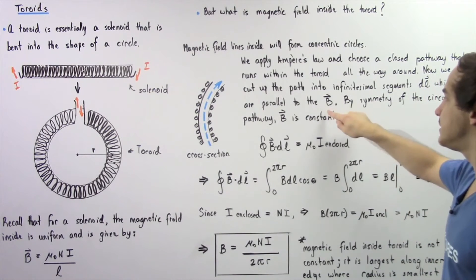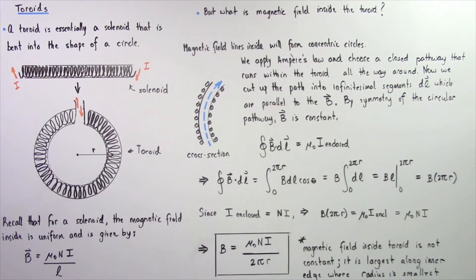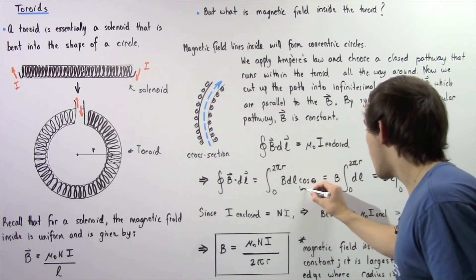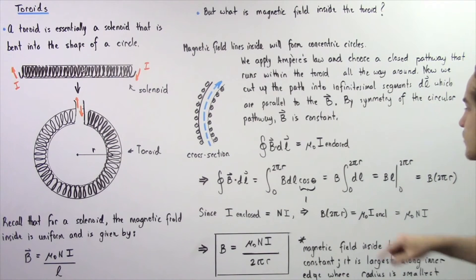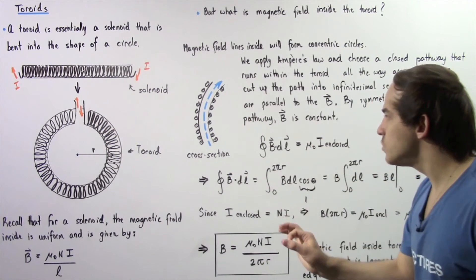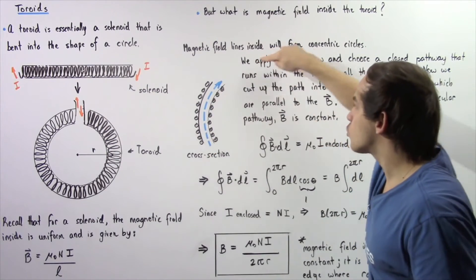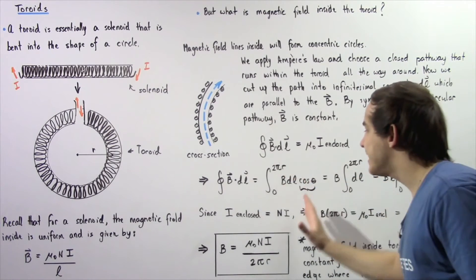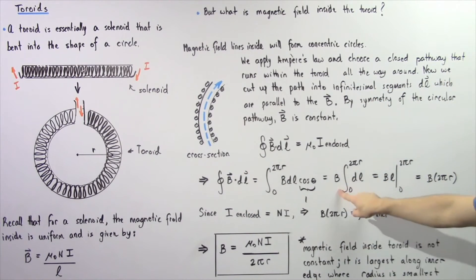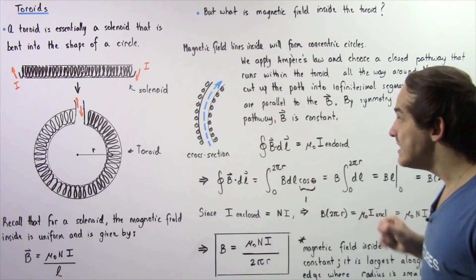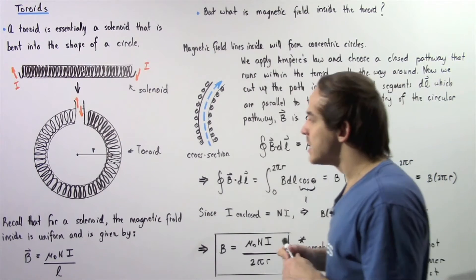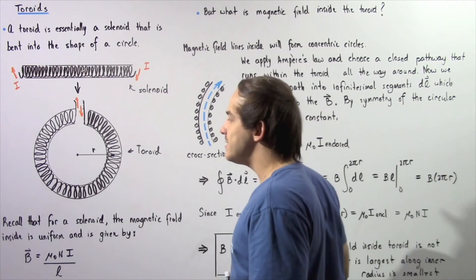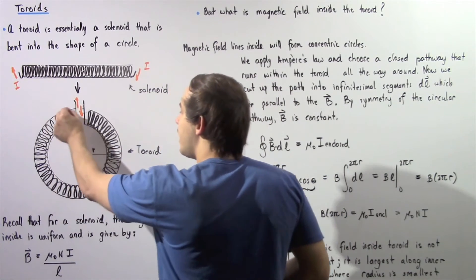Because dl is parallel to B, the angle between them is 0, and cosine of 0 is 1. Also notice that B is constant around our circular loop, so we can take it out of the integral. We are integrating about a closed pathway, so we begin at the point chosen to be 0 and loop all the way around.